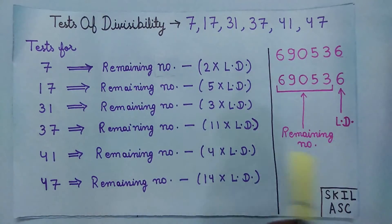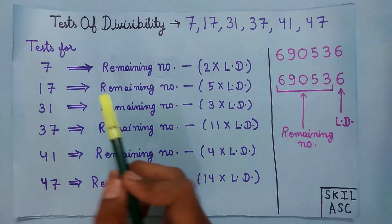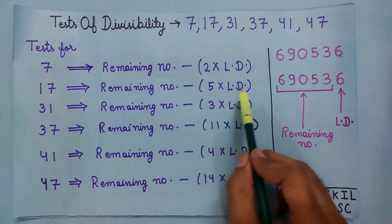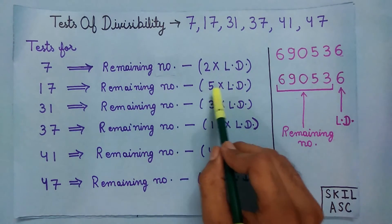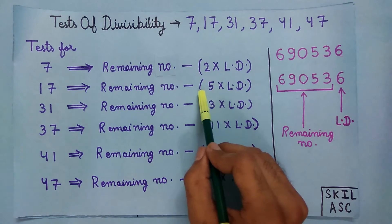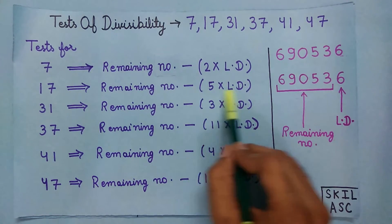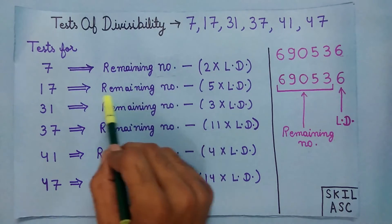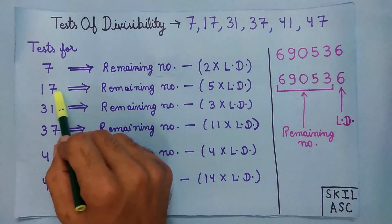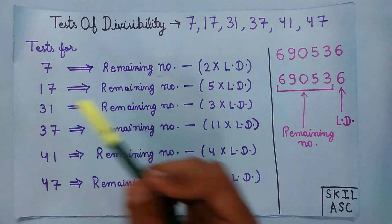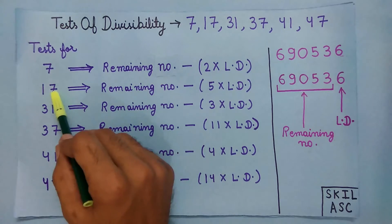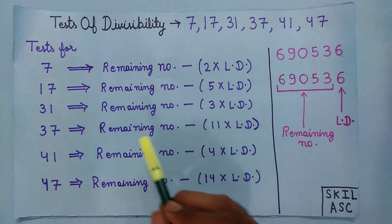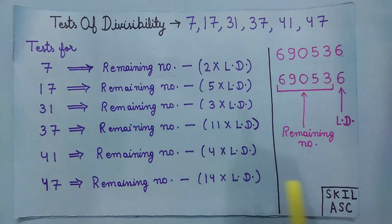Now to check if a number is divisible by 17 or not, multiply the last digit by 5 and then subtract this from the remaining number. If this value is divisible by 17, then the number is also divisible by 17. To better understand this, let's take an example.